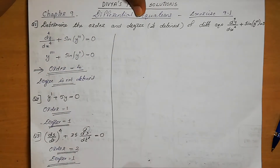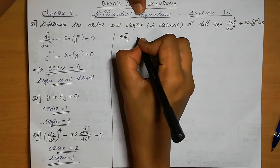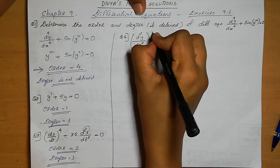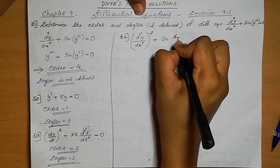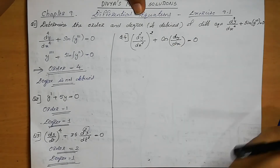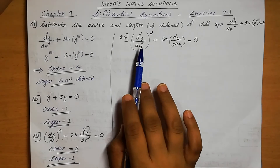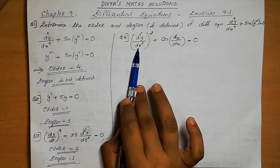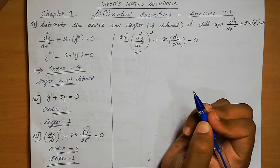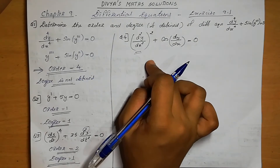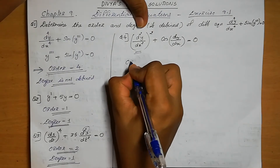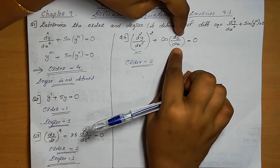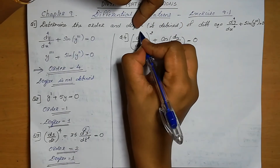Question number 4: (d²y/dx²)² + cos(dy/dx) = 0. The highest order derivative present is d²y/dx², which is the second order derivative. dy/dx is the first order derivative. The highest order present is 2, so the order equals 2.